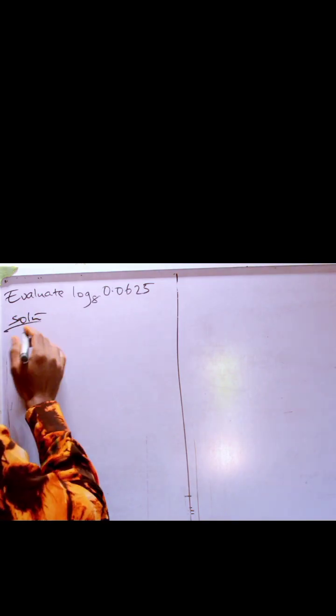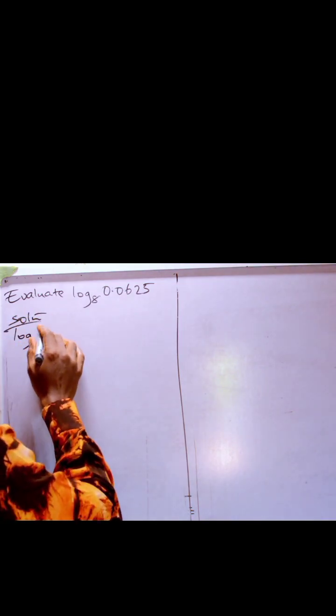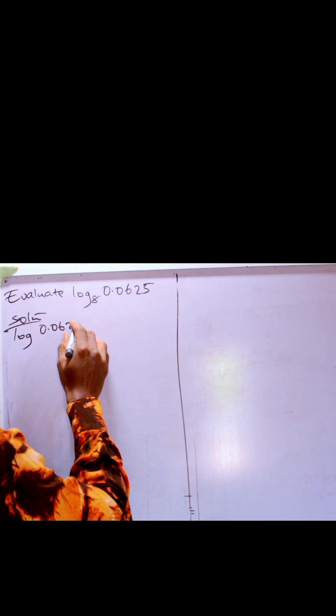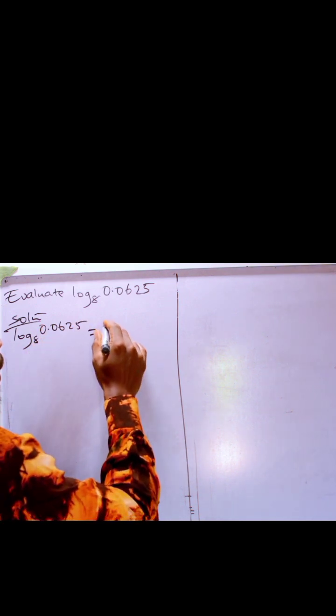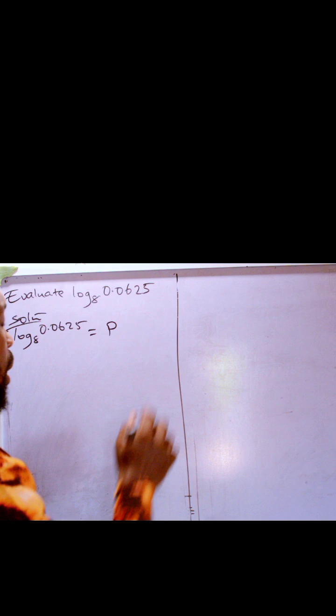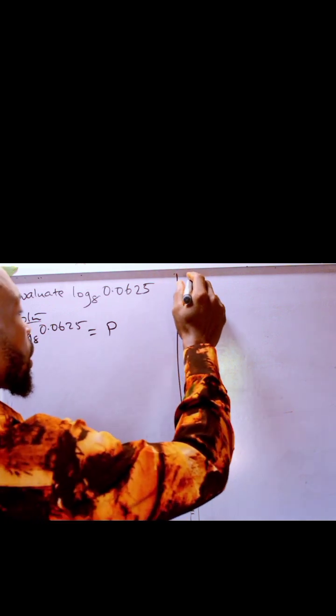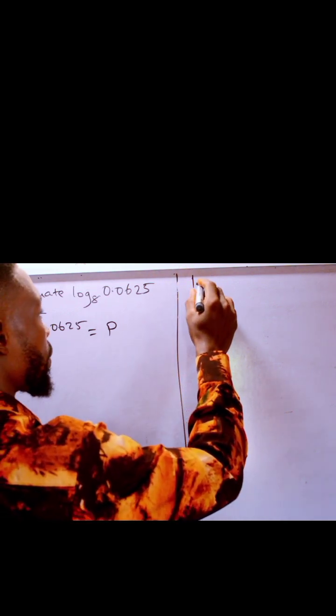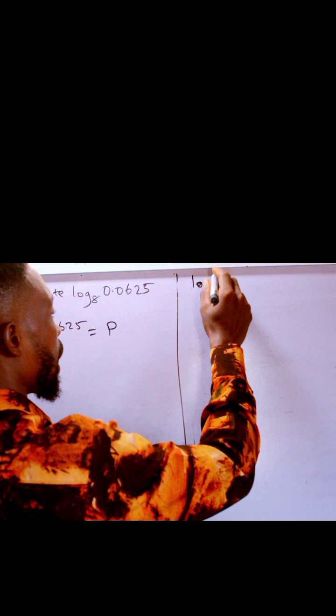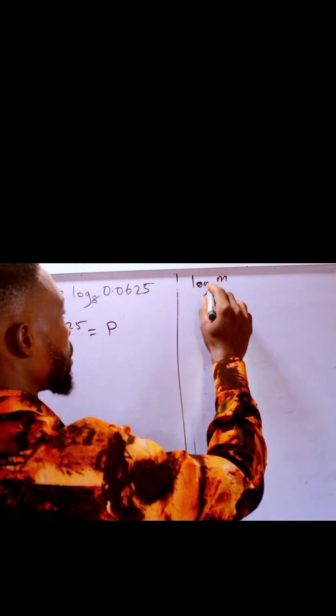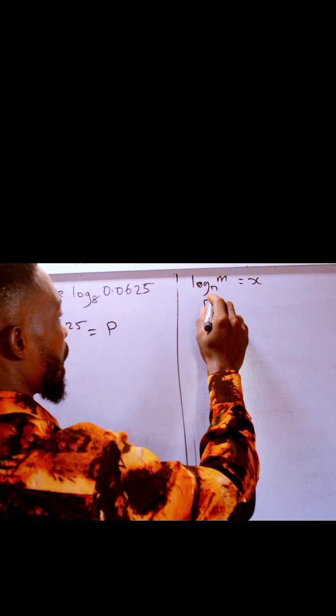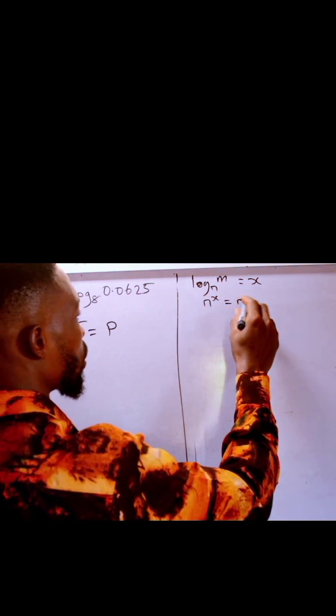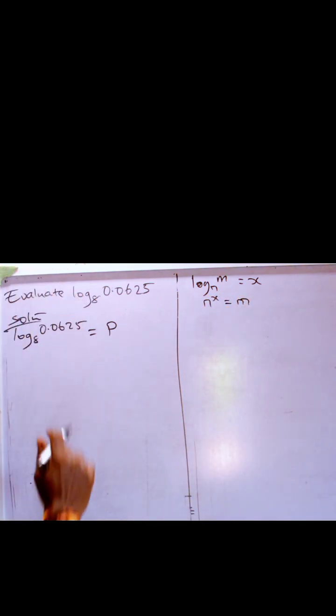Solving log base 8 of 0.0625, let's say it equals p. Remember the log reading law that says if we have log m in base n and we say it equals x, what it means is that n raised to power x equals m.